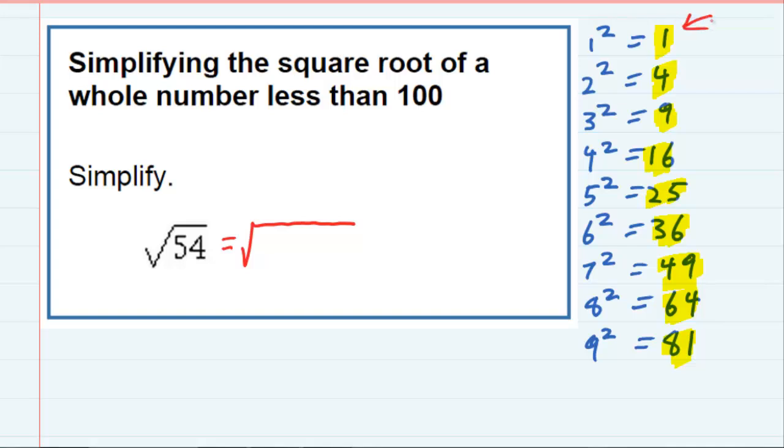So I want to rewrite it as one of these times something else. So the first one here, 1 doesn't do any good because 54 is 1 times 54, and that's not going to simplify. So let's move on to 4. 54, I can't rewrite that as 4 times another whole number.